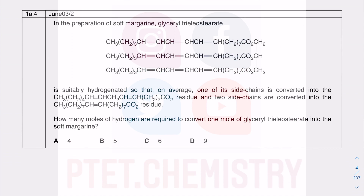Moving on to question 4, about the preparation of soft margarine — you learn about margarine production in GCSE or A-level. It's not a very healthy substitute for butter because it's industrially produced through hydrogenation: adding hydrogen across double bonds, which is a reduction of alkenes covered in the organic chemistry section.